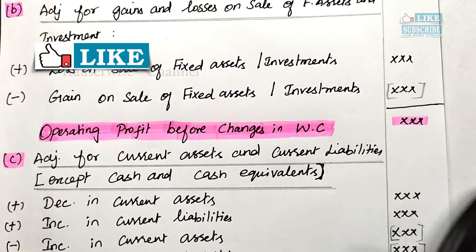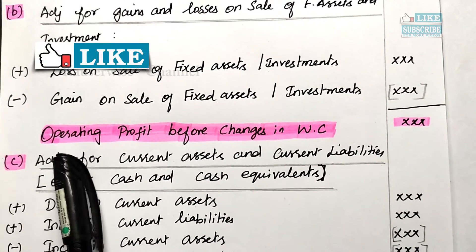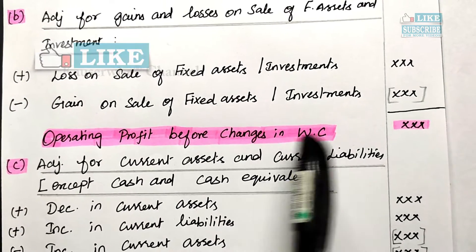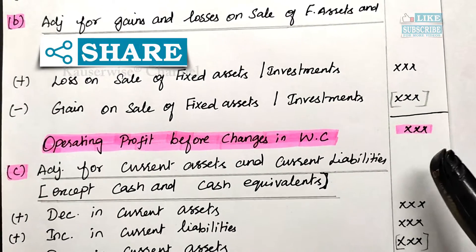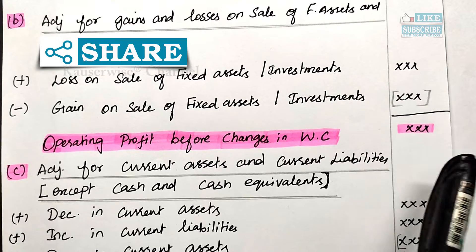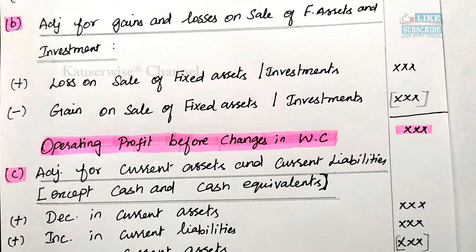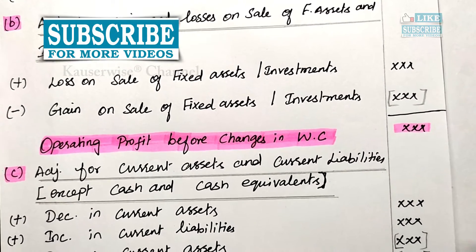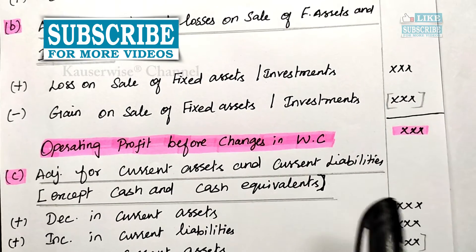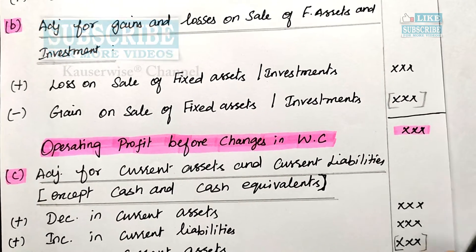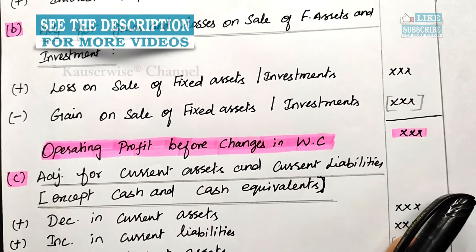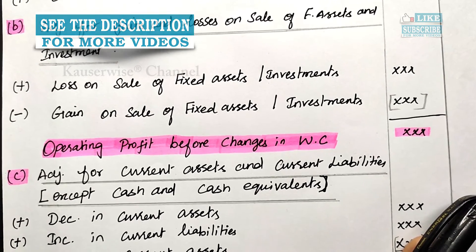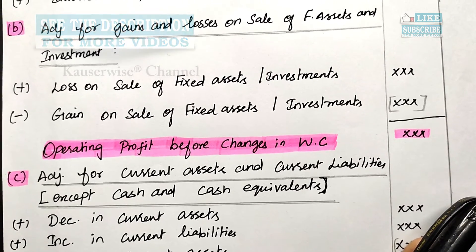See the format — this is the way to calculate operating profit before changes in working capital. In the next video, we are going to see calculation of cash flow from operating activities in different scenarios. You can find the links in the description box. Hope you like this video. Please hit the like, comment, subscribe, and share with your friends. Thank you.